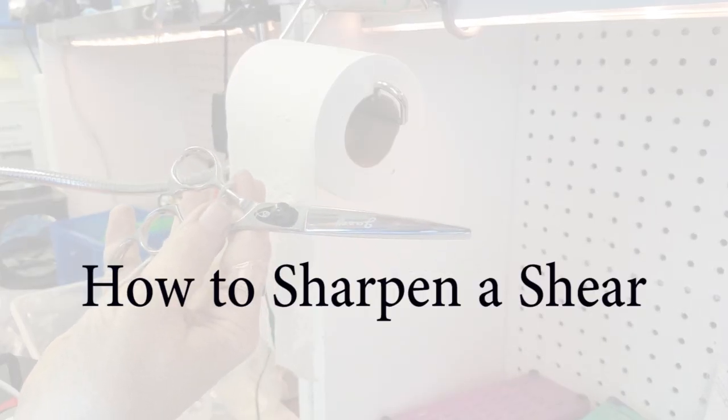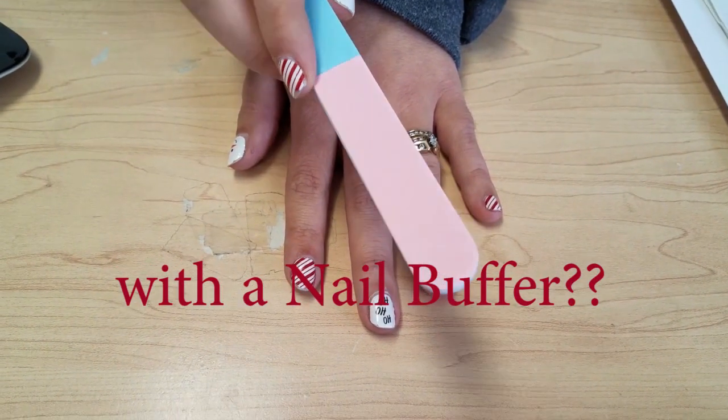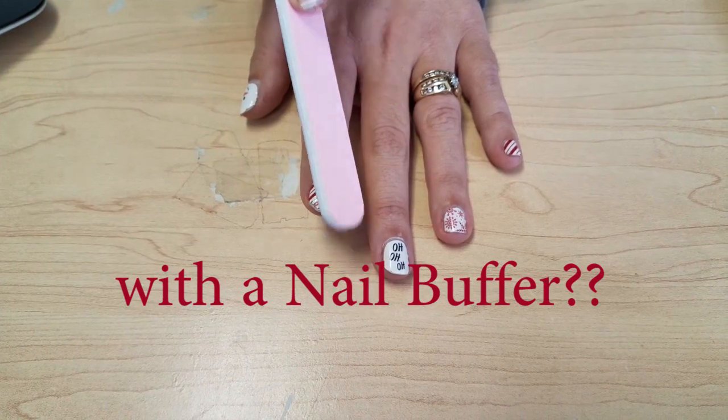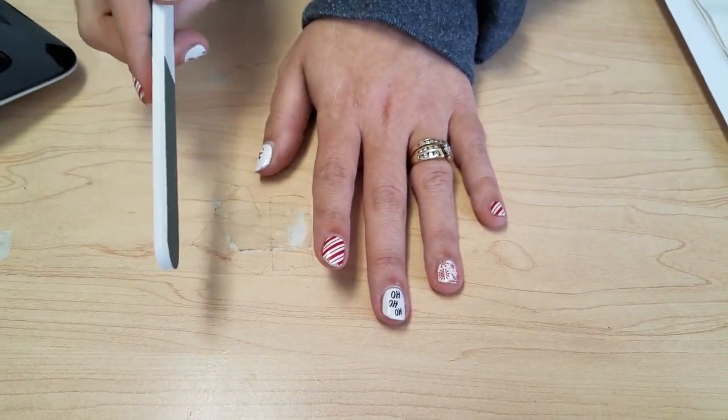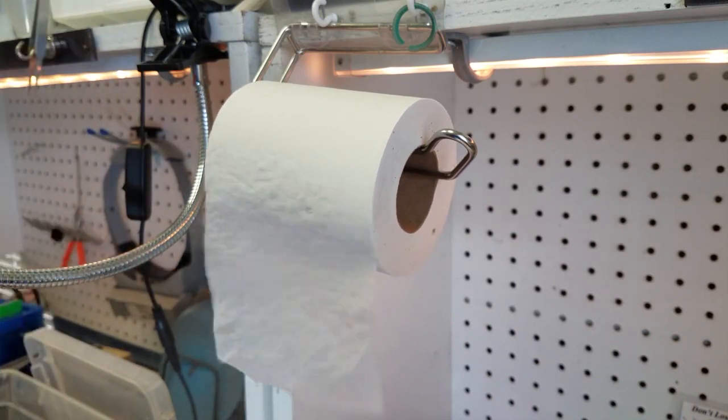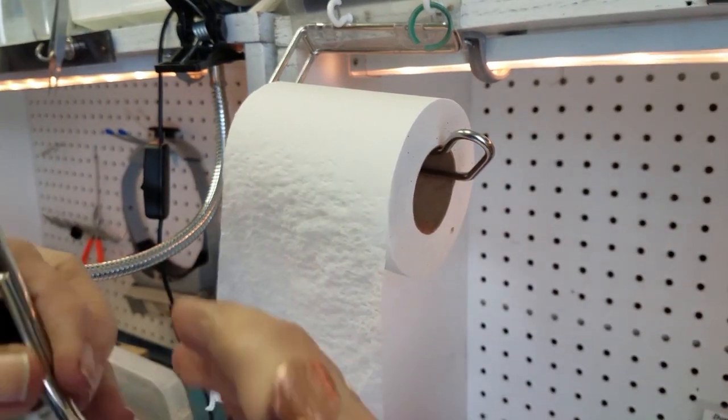How to sharpen a pair of shears using a nail buffer, like what you'd use on your nails. This might not be really called sharpening, more like reconditioning. Here's a Jazzy shear that's been in our sample package.